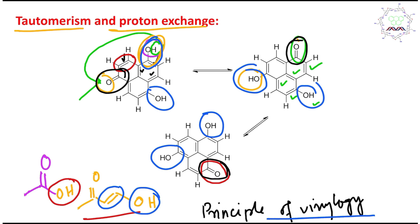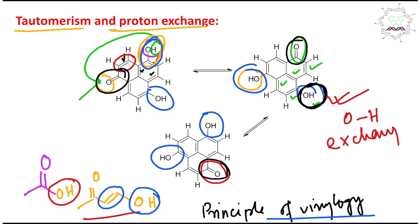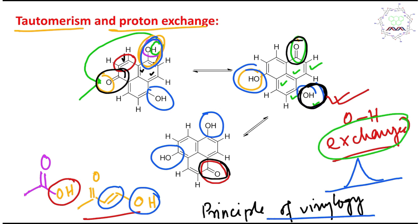This tautomerization process is very rapid. NMR cannot find the exact position of the OH because, first, it is polar, and second, it is getting exchanged due to tautomerism. Although OH bonds are sometimes observed as broad peaks, because of this rapid exchange phenomenon they are not observed here. Overall, only two types of protons are observed.